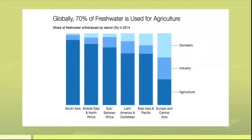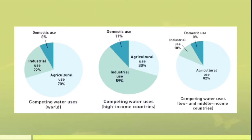First, it is important to examine the problems caused by the agricultural sector. According to the World Bank Group, globally 70% of fresh water is used for agriculture, and by 2050, feeding a planet of 9 billion people will require an estimated 50% increase in agricultural production and a 15% increase in water withdrawals.